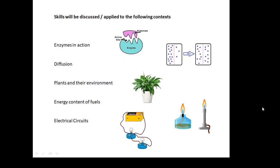Enzymes, diffusion, plants, fuels, and electrical circuits. So we'll learn a bit more physics, chemistry, biology, and the skills that we are talking about will be applied to experiments and theory involving these five context areas.